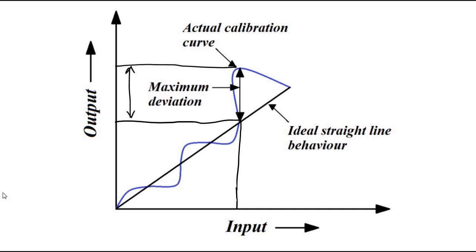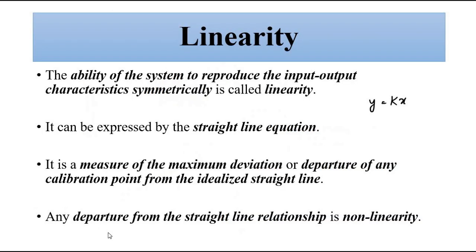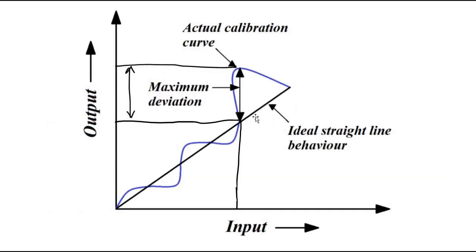Any departure from the ideal straight line behavior gives rise to nonlinearity. At some points the deviation is small, but at one point it is maximum — and that maximum deviation point gives us the nonlinearity. The ideal straight line behavior is specified so that output readings can be taken in a simplified manner.